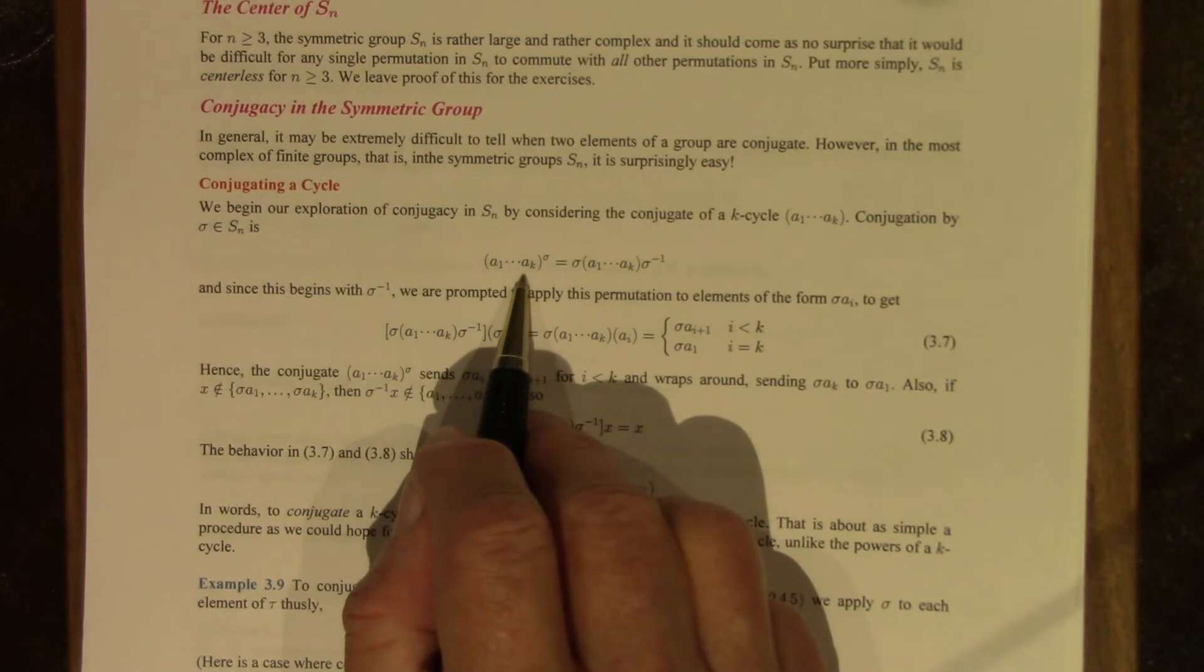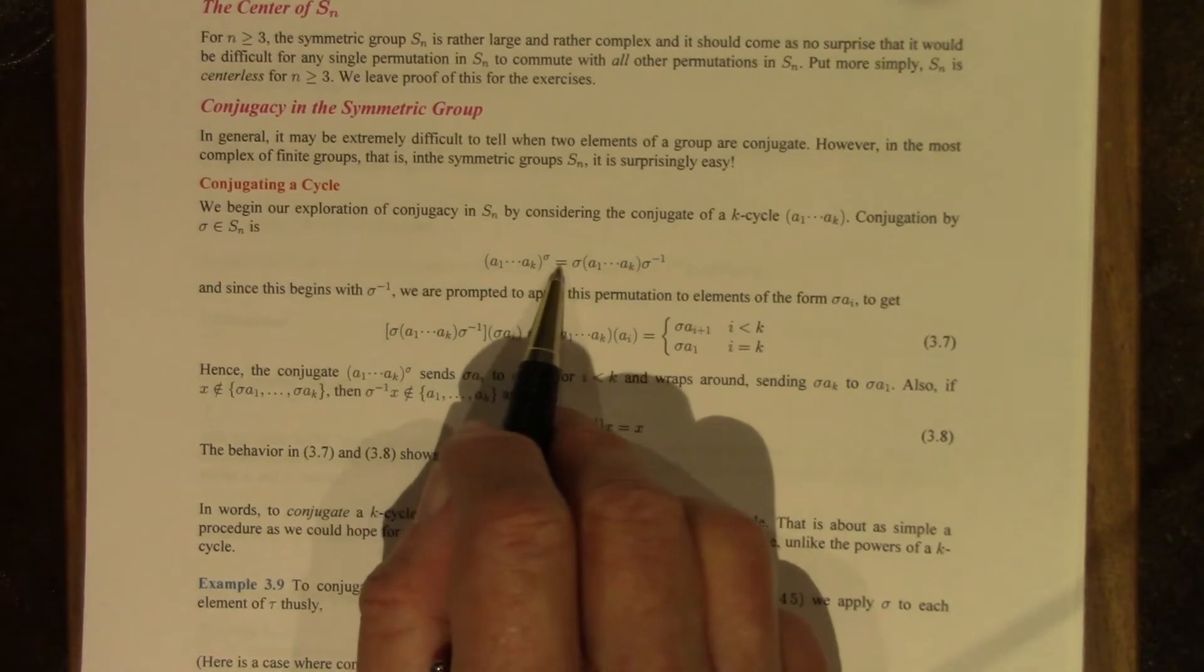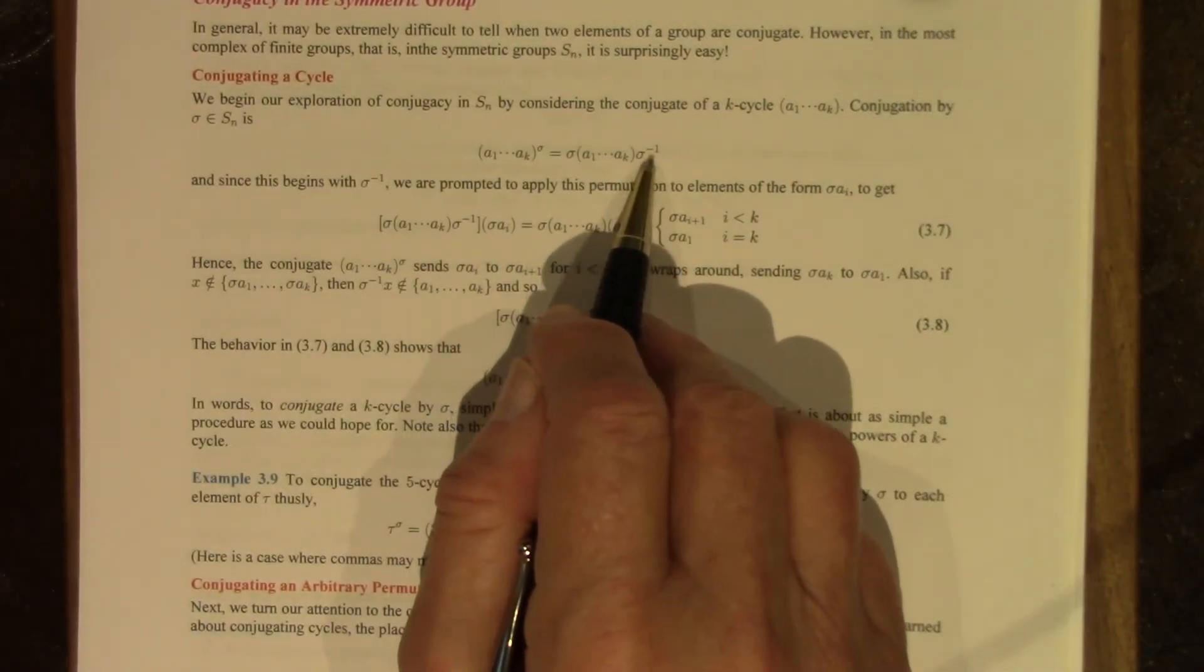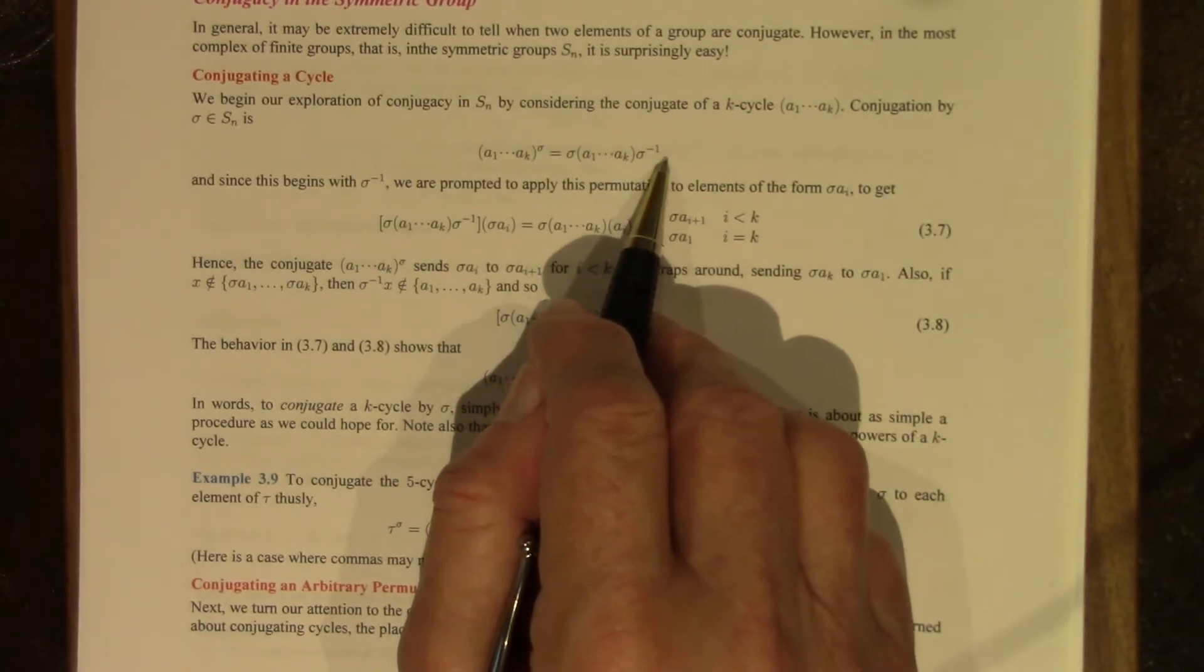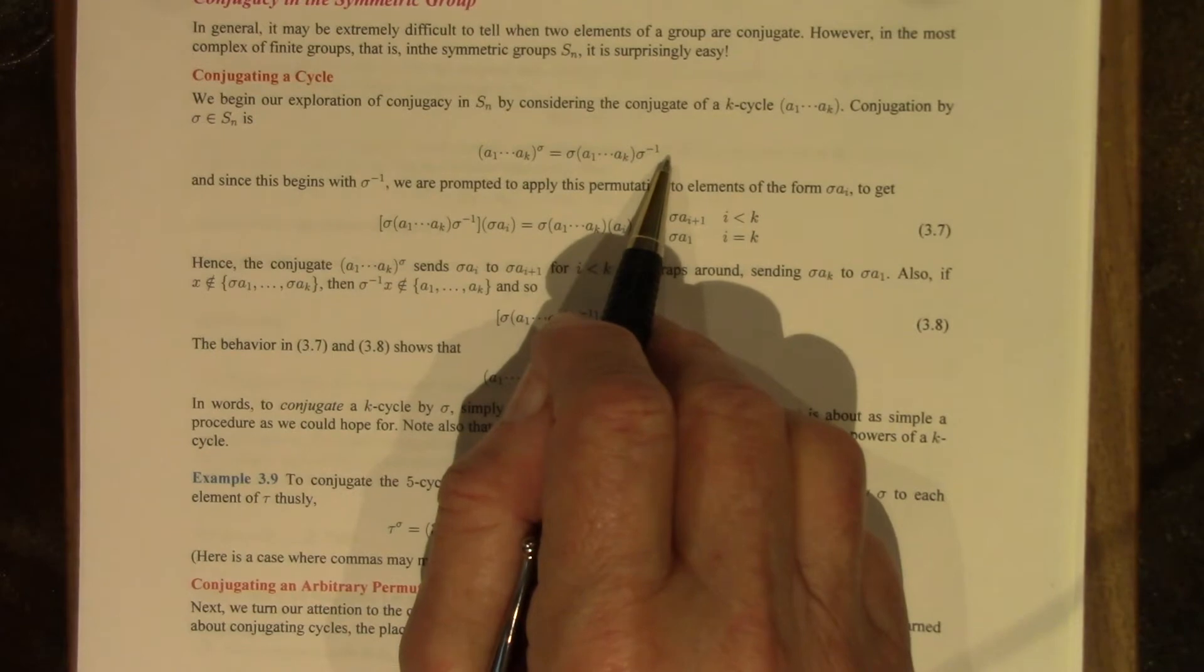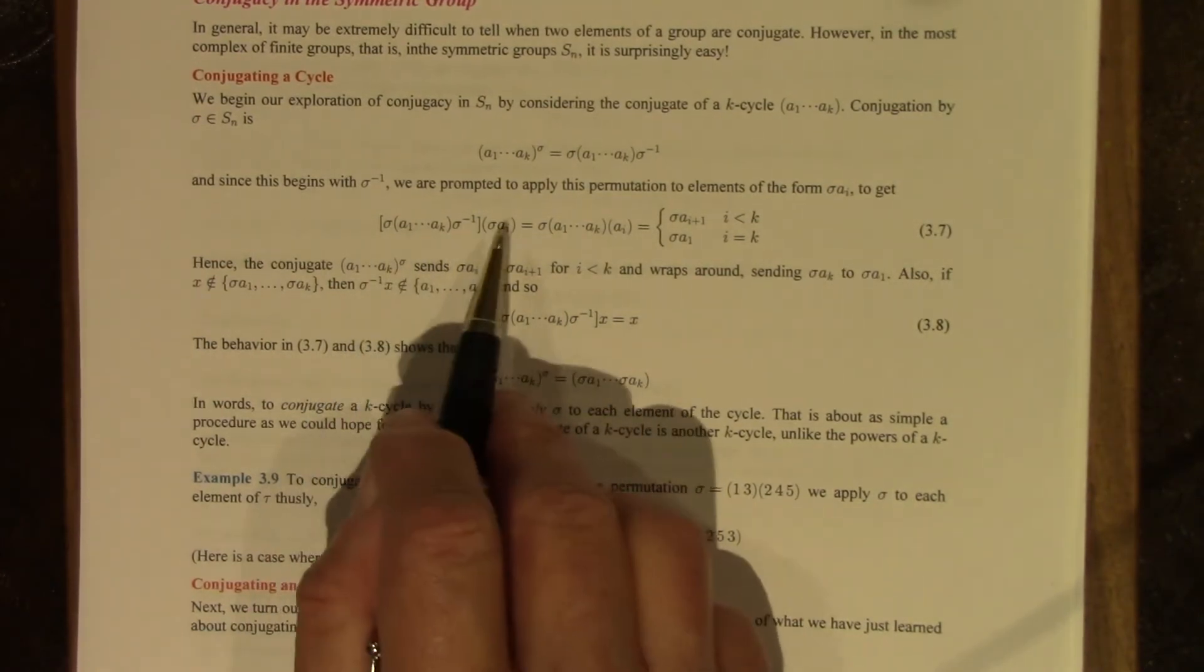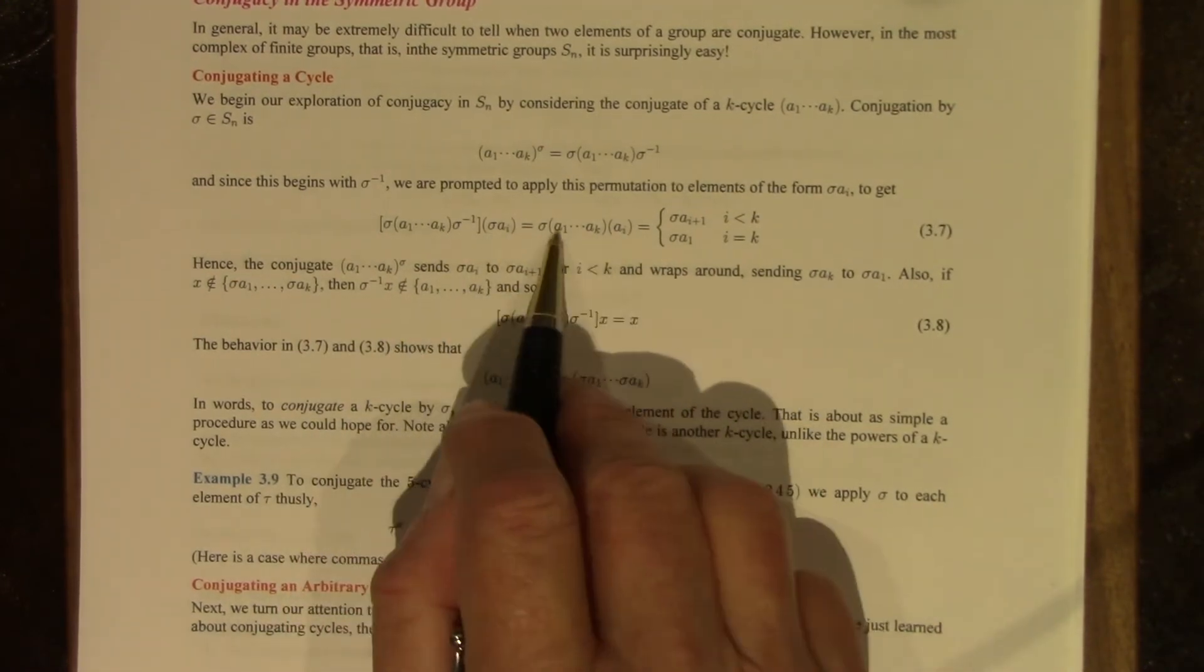This is the notation, and this is our definition. We put the sigma inverse on the right rather than on the left, but it amounts to the same thing. Since this expression begins with sigma inverse, we're not necessarily interested in applying this to a sub i, but if we apply it to sigma a sub i, we're going to get somewhere more easily. So here is sigma a sub i, here is the permutation, the conjugate, applied to sigma a sub i. The sigma inverse and the sigma cancel, and we get this.